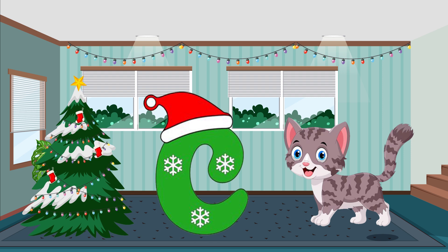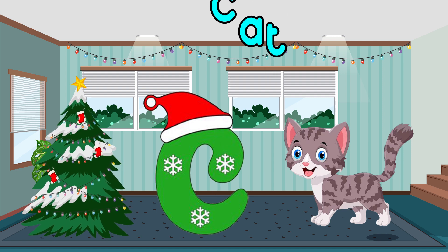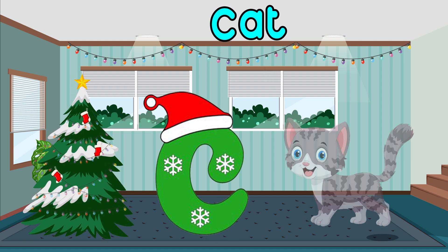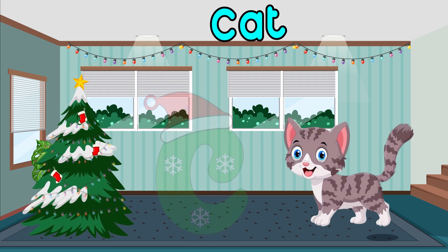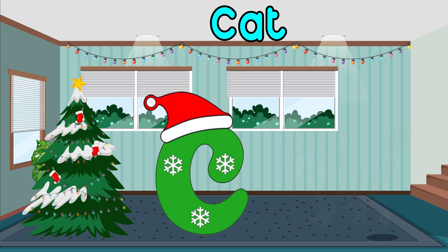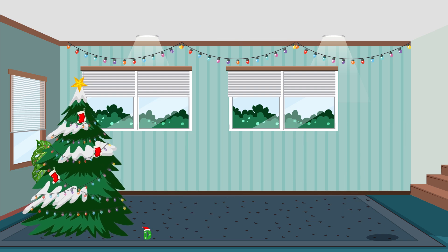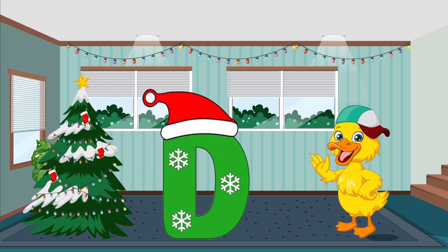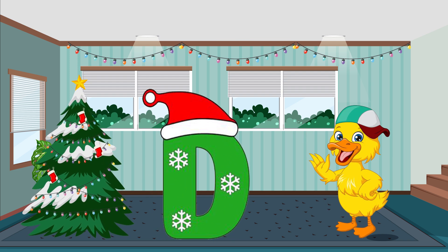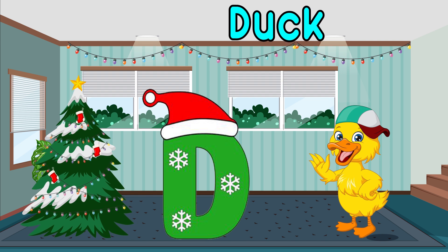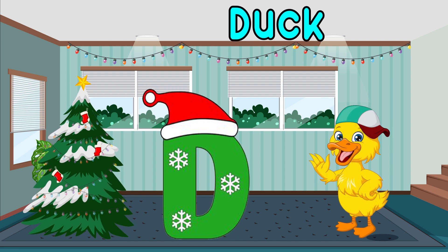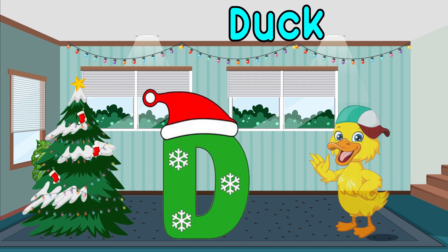C is for cat. C-c-cat, c-c-c-cat. C, cat. D is for duck. D-d-d-d, duck. D-d-d, duck. D, duck. D, duck.